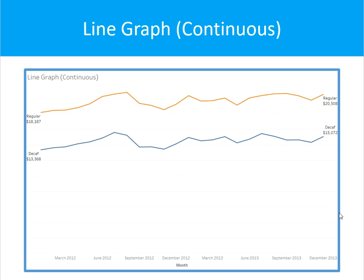A line graph or line chart — continuous. To use the line graph, you must have a date — either year, quarter, month, or day. This is extremely helpful when you're trying to tell a story about how things have changed over a period of time. You can use several lines in the view to show a continuous flow of data. Minimum requirements are one date, zero or more dimensions, and one or more measures.